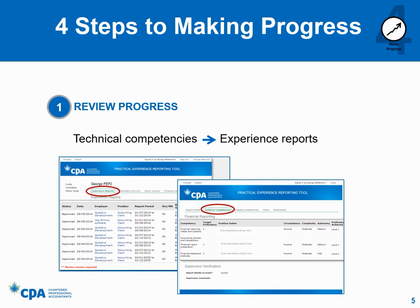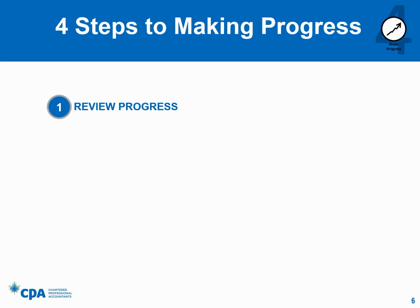Where you do have concerns about a specific competency, you can choose to document them by adding a note to that area. Future CPAs track their development of the enabling competencies by responding to five three-part reflective questions, with each question corresponding to an enabling competency area. Future CPAs also self-assess their proficiency level with respect to these enabling competencies. Future CPAs are not expected to answer all five of the questions in each experience report; they are only expected to report and assess those that have been developed in the particular reporting period. The PERT also contains detailed guidance on what performance of the enabling competencies looks like at different proficiency levels, and you and the future CPA can refer to this guidance when considering the appropriateness of self-assessments.